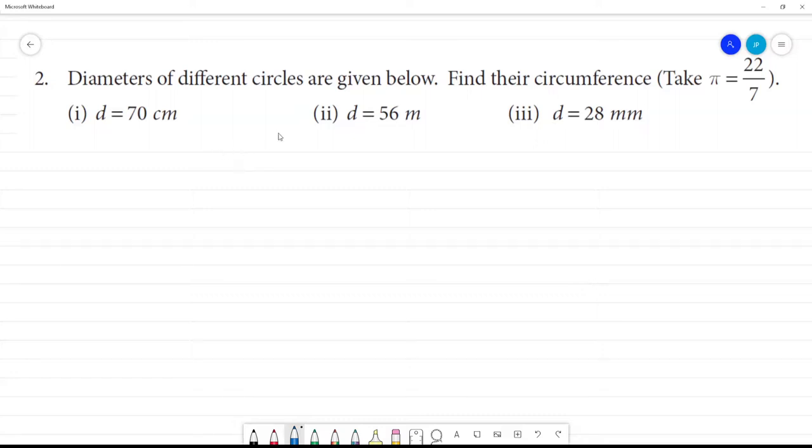Diameters of different circles are given below. Find their circumference. So, we have diameter. First one, diameter is equal to 70 cm. Then, what is radius?